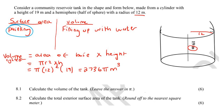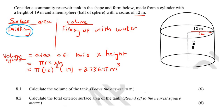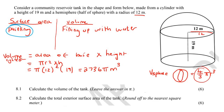Now we're going to find the volume of the hemisphere part — you can see the hemisphere at the top. The formula for the volume of a sphere — not a hemisphere, just a complete sphere like a cricket ball or golf ball — is 4/3 π r cubed. But now we have half of a sphere, so we will halve that number. So the volume of a hemisphere is going to be 2/3 π r cubed.